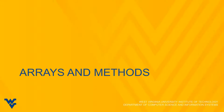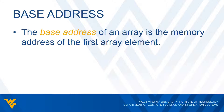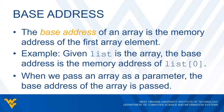We're now going to look at how we use arrays in our methods. Before we talk about integrating arrays into methods, we need to define the base address. The base address of an array is the memory address of the first array element. For example, if list is my array, the base address is the memory address of list[0]. When we pass an array as a parameter, we're passing the base address of the array — the memory address of the first element — because an array is a reference variable that stores a memory address pointing to the first element.